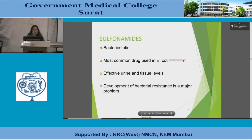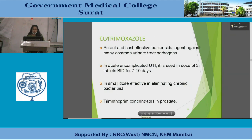Sulfonamide is a bacteriostatic agent most commonly used in E. coli infection; it is effective at both urine and tissue level, but development of bacterial resistance is a major limitation. Cotrimoxazole is a potent, cost-effective bactericidal agent against most common urinary tract pathogens.